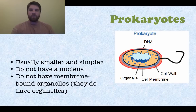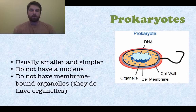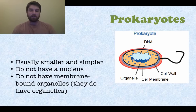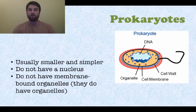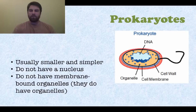Prokaryotes — we have a picture of one right here. You see the DNA, some organelles, a cell membrane, and a cell wall. Prokaryotes are usually much smaller and simpler. A lot of times they're single-celled organisms. They do not have a proper nucleus — they just have their DNA free-floating around. And they do not have membrane-bound organelles. They do have organelles, but those organelles do not have membranes around them, and neither does their nucleus.